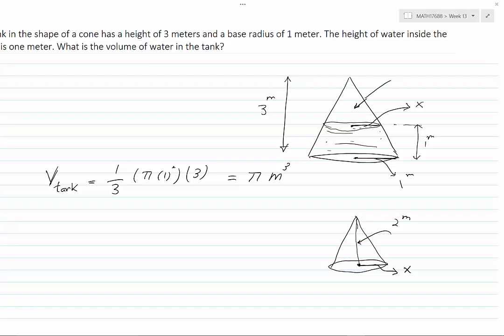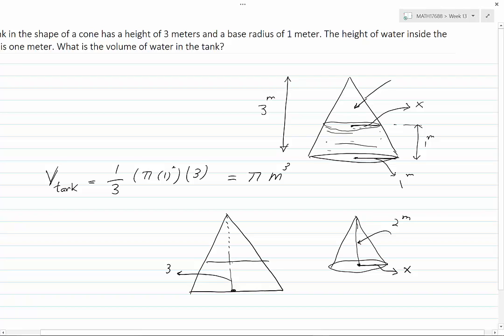A cross-section of the original tank would give us this information: the total height is 3 and the height of water is 1 meter, and the radius of base is 1, and we are to find x.